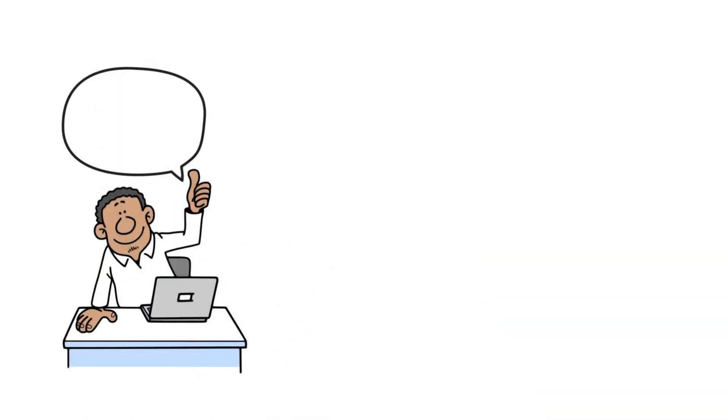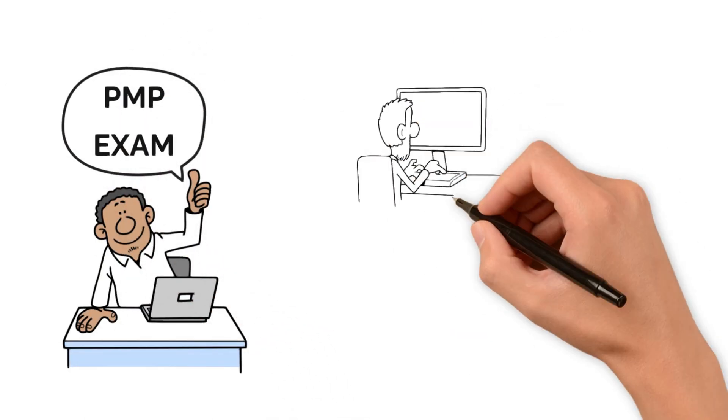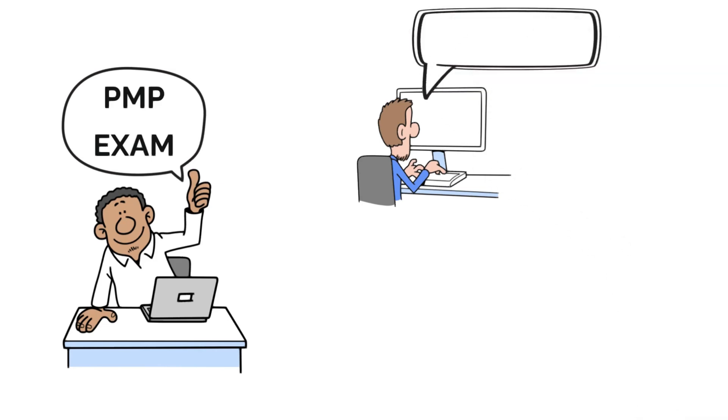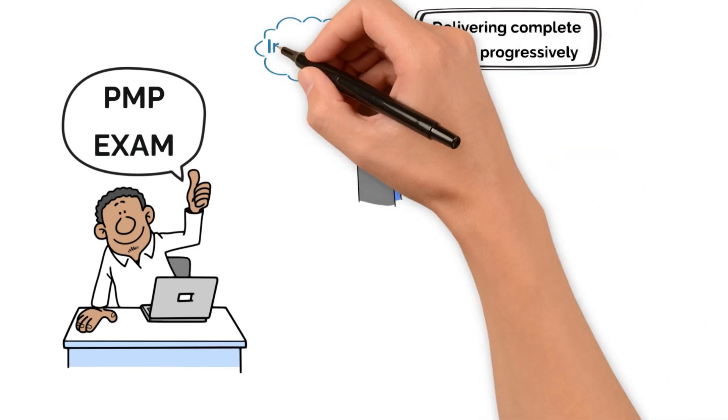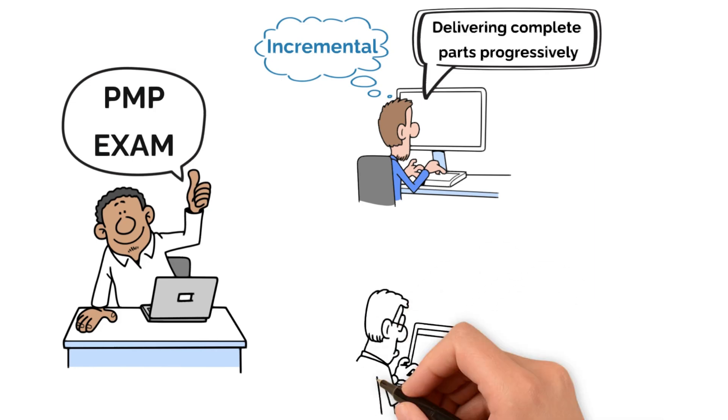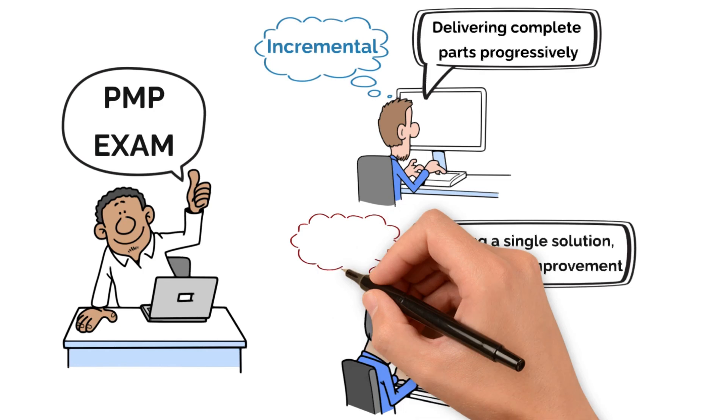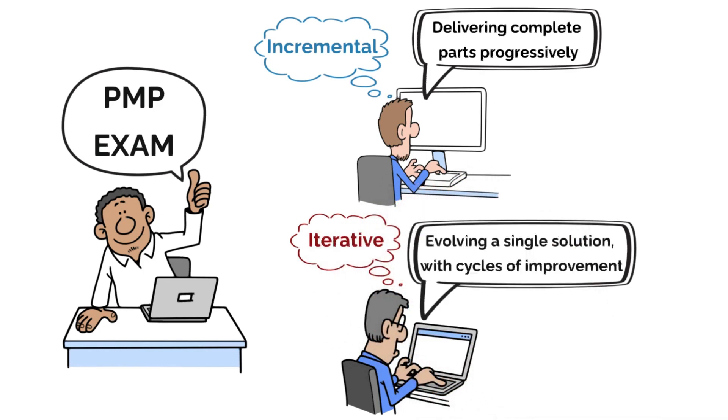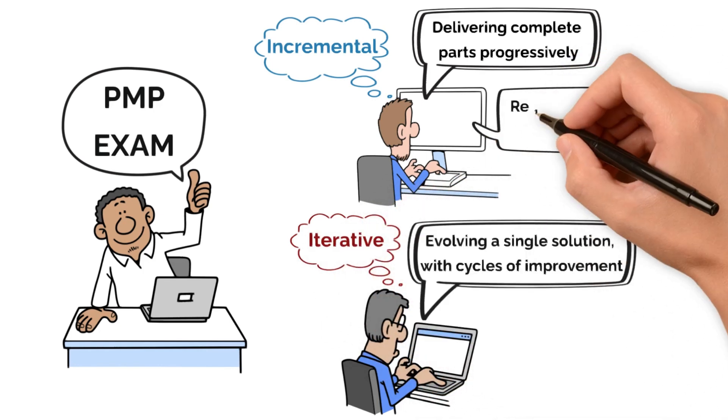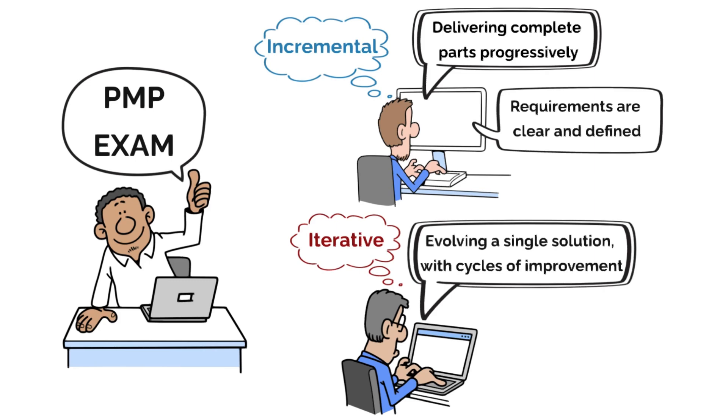If you're studying for the PMP exam, here's a quick way to spot the differences. If a question talks about delivering complete parts progressively, you're likely dealing with an incremental approach. But if the focus is on evolving a single solution over time with cycles of improvement, then it's pointing toward an iterative model. Also remember, incremental approaches work well when requirements are clear and defined, while iterative models adapt better to change and ambiguity.